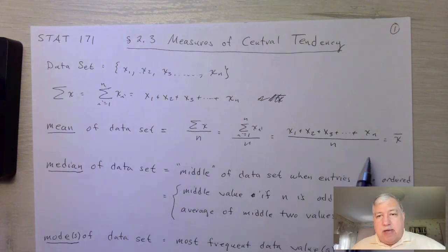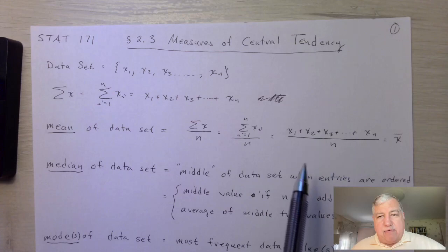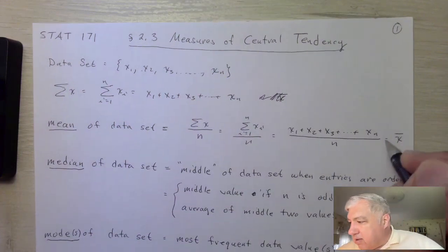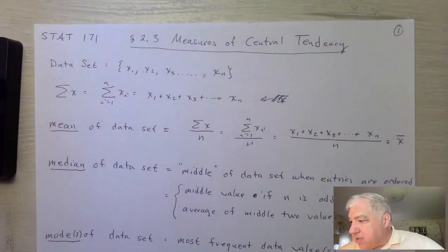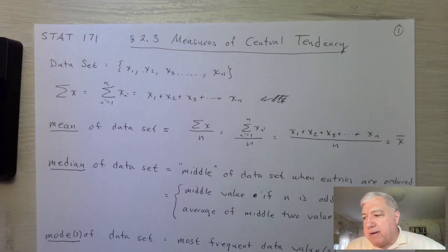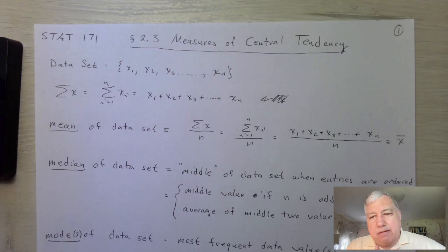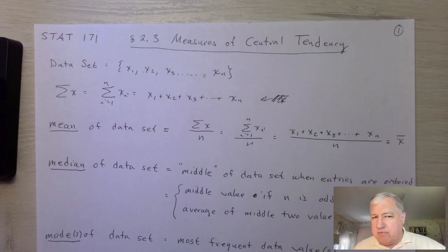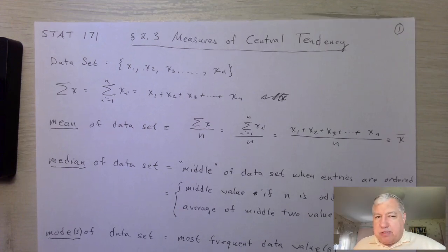The mean or average is denoted by x-bar when we're talking about a data set — specifically when our data set is a sample. If our data set is a population, we use a different symbol for that, which we'll talk about next chapter.